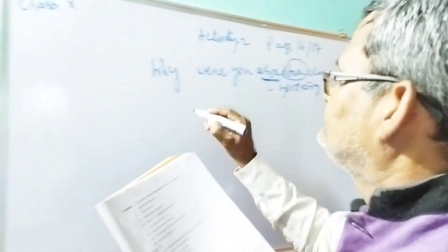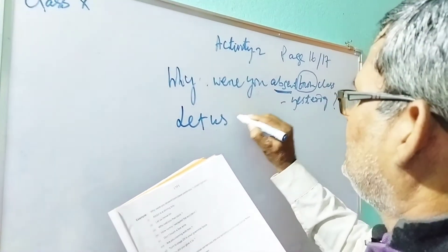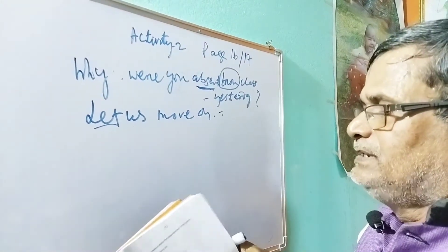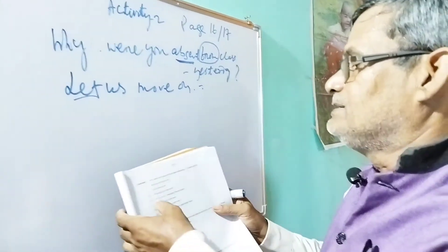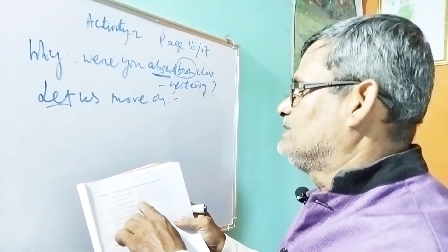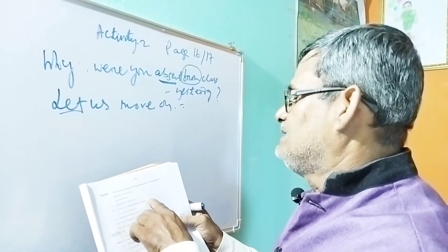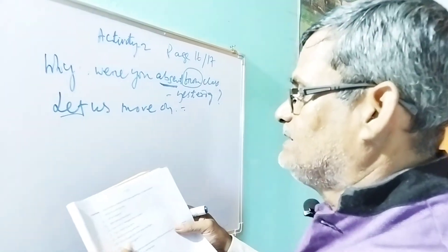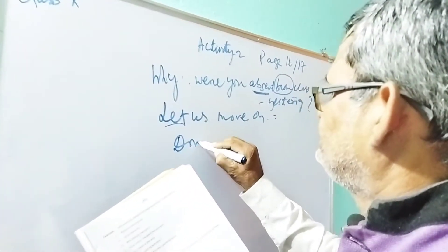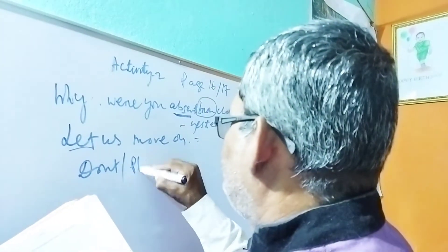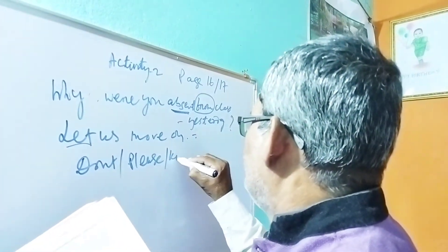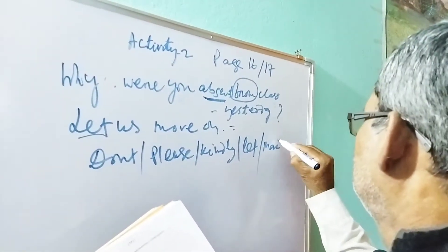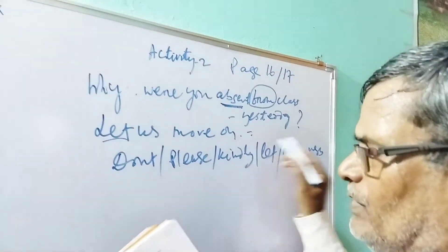The second one: 'Let us move on.' Remember, if a sentence begins with 'let,' that is an imperative sentence. 'Let me go' — begins with 'let,' imperative. 'Who told you that story?' — question mark, interrogative. 'How luckily I escaped the accident!' — exclamatory mark, exclamatory sentence. 'Don't touch a live wire' — if a sentence begins with 'don't,' 'please,' 'kindly,' 'let,' or a main verb, those are all imperative sentences.